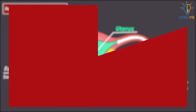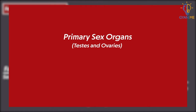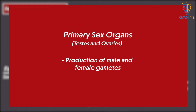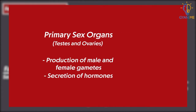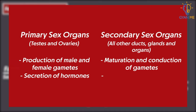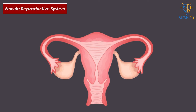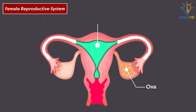In females, primary sex organs are those organs which are responsible for production of male and female gametes and secretion of hormones, while all secondary sex organs are those organs which are responsible for maturation and conduction of gametes and also help in nurturing the developing offspring. The main function of the ovary is to produce eggs, i.e. ova, for reproduction, and the other secondary sex organs facilitate the reproductive process of the female.